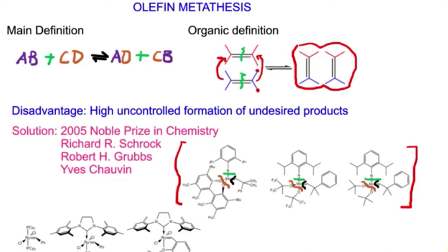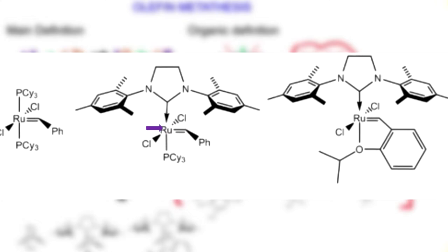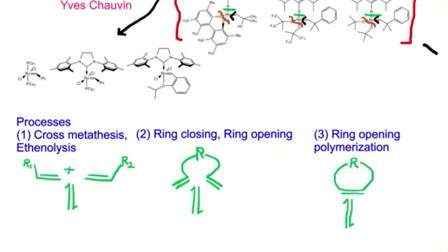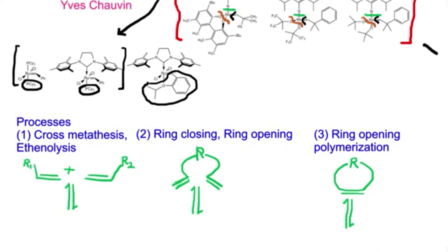Another catalyst was proposed by Grubbs, who looked at ruthenium carbene complexes. This ruthenium center has specific modifications based on the ligand environment. In the first two generations, we have the same substituents attached at the axial position, but then there is a modification where that ligand is substituted for something different — called an isopropoxystyrene — and this particular change enables these catalysts to perform the necessary job in olefin metathesis reactions.